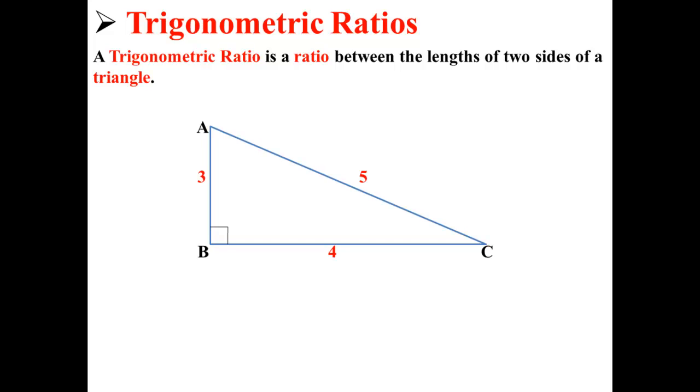For example, here we have a triangle with points A, B, and C, with legs of 3 and 4, and with a hypotenuse of 5.